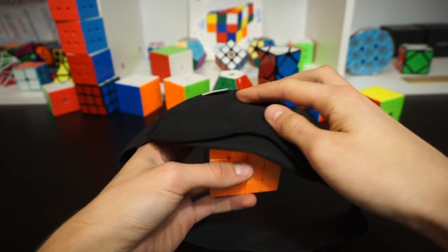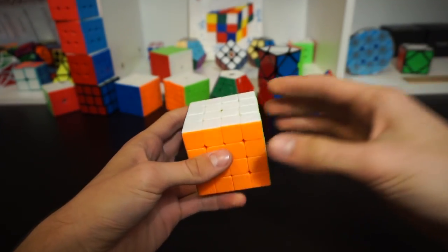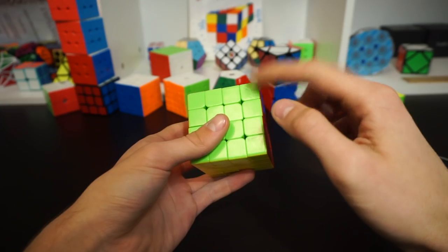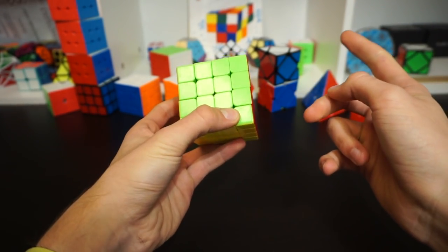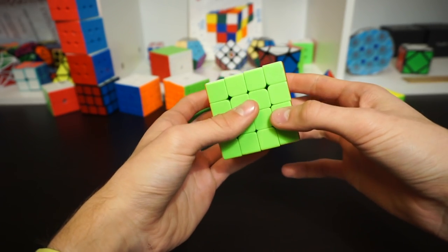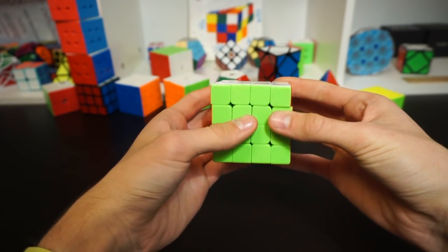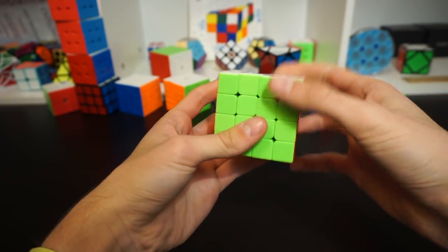Next up we have some crazy disciplines like 4x4 blindfolded which I have practiced for. I have like four successes and my goal is to get a success first of all, but whenever I actually do a practice solve I actually get sub-NR single, so maybe I'll get the NR.